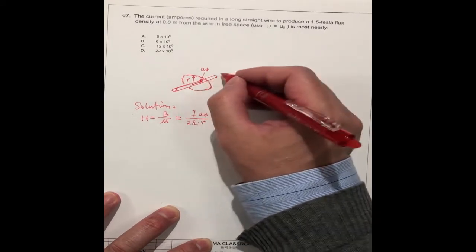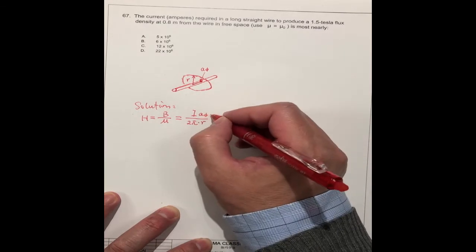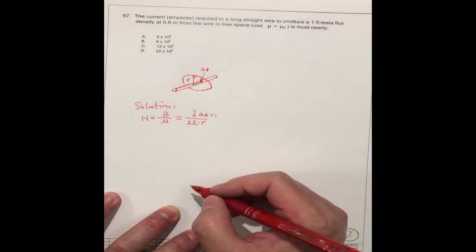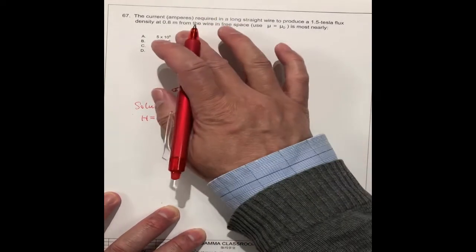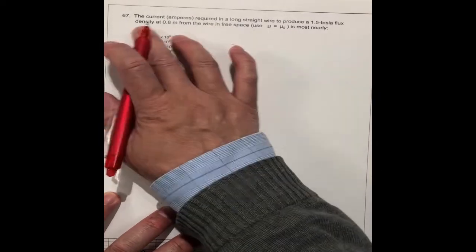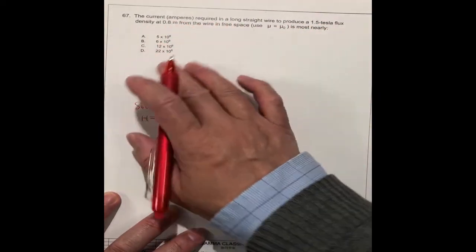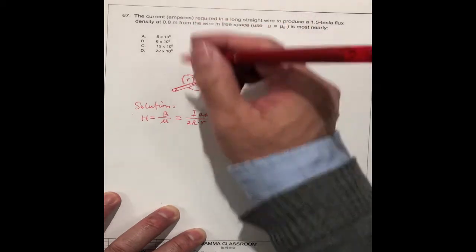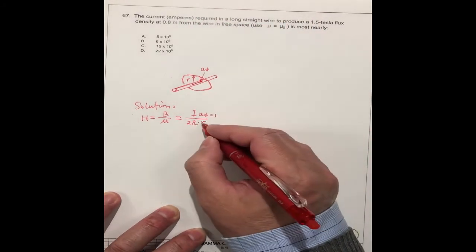The current, we don't know, we have to find the current. The distance R is equal to 0.8 meter, and the B we already know is 1.5 tesla, and mu is mu zero.